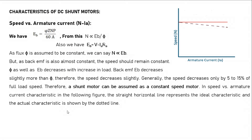Next, the characteristics of DC motors. First, the DC shunt motor. For the speed versus armature current characteristic of the shunt motor, an important question is: why is the shunt motor called a constant speed motor? We have Eb = φZNP / 60A, from which N is directly proportional to Eb/φ. Also, Eb = V − Ia·Ra.